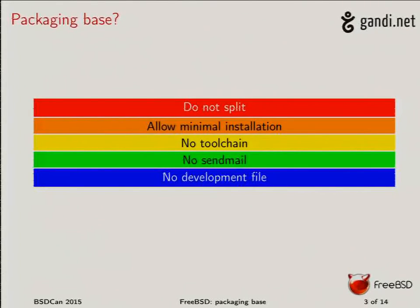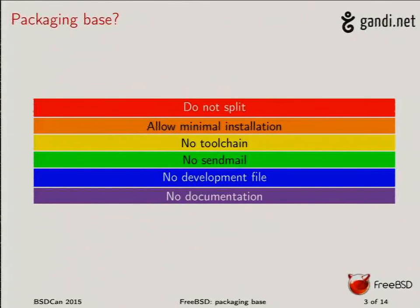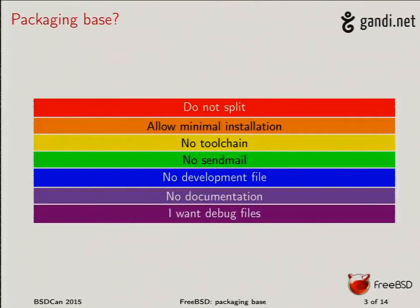Some people say they don't want development files — why have those .a files and .h files taking up space on their hard drive? Others say they don't care about documentation at all because they have Google or another box where documentation is installed. And there are people who installed a FreeBSD release and want to debug things, but we don't provide debug files — so how can they install them when they want to debug software they're developing using FreeBSD libraries?